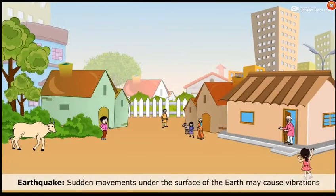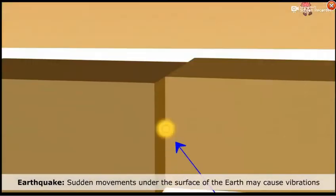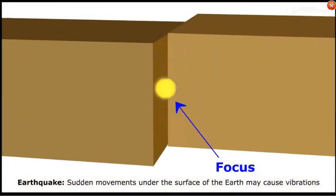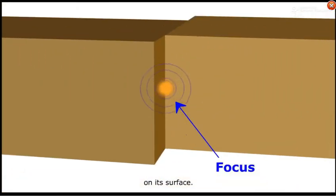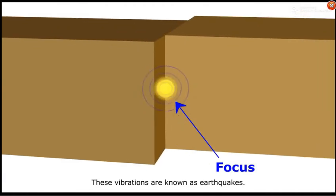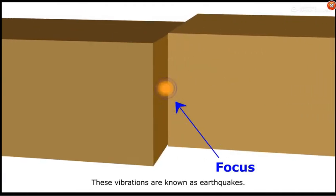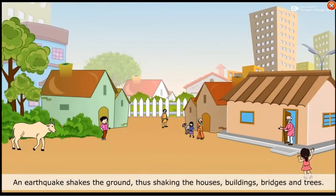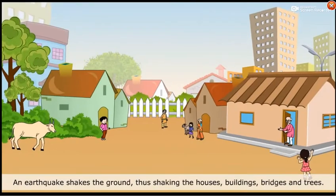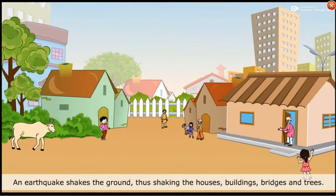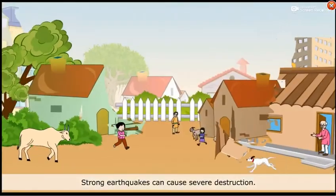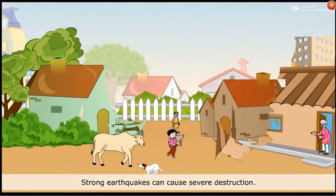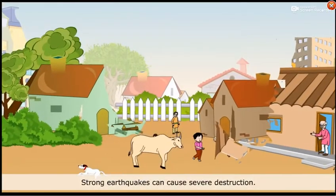Earthquake. Sudden movements under the surface of the earth may cause vibrations on its surface. These vibrations are known as earthquakes. An earthquake shakes the ground, thus shaking houses, buildings, bridges and trees. Strong earthquakes can cause severe destruction.